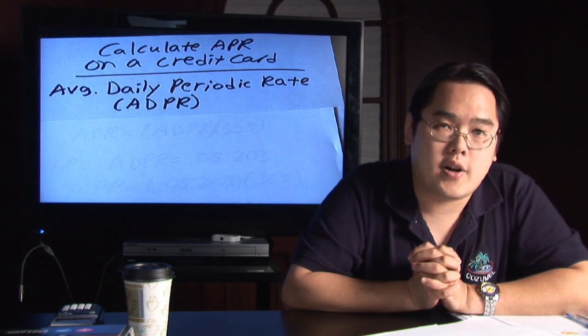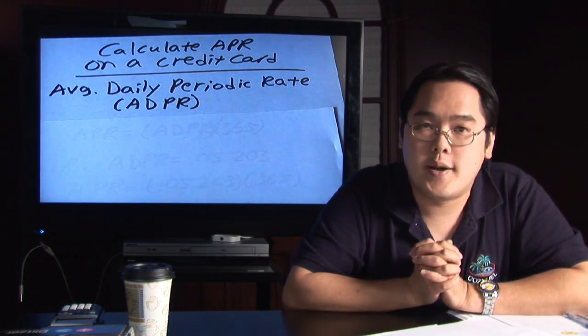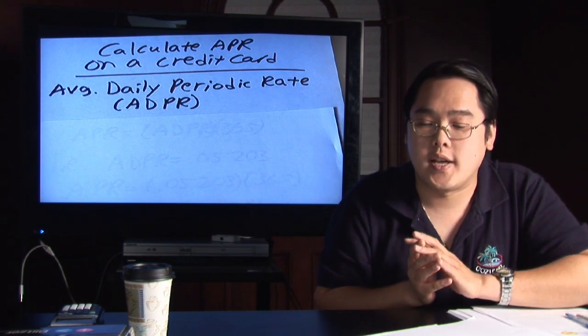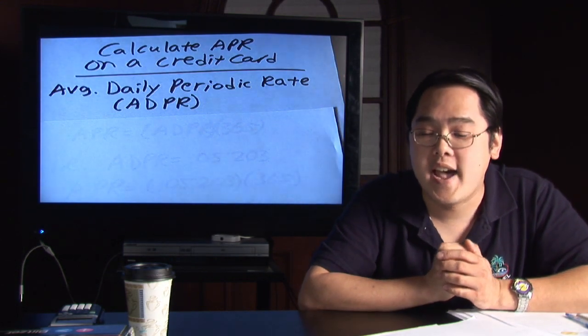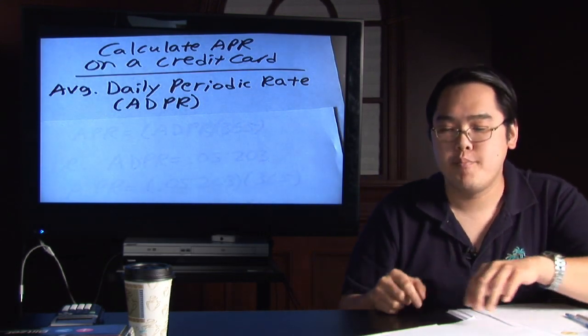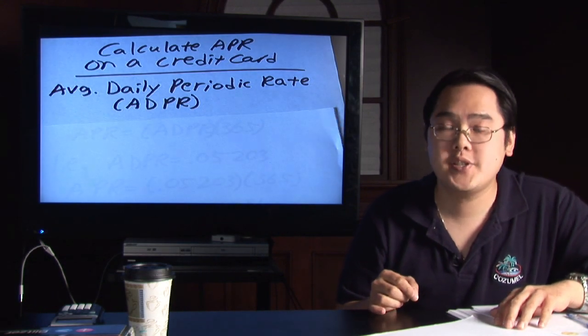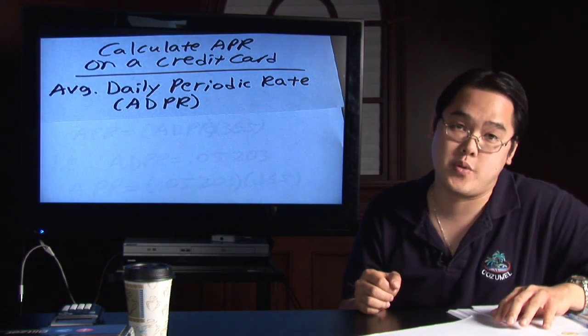At the bottom of your credit card statement there is a number that's phrased something to the likeness of average daily periodic rate. For simplicity we're going to call it ADPR for short.